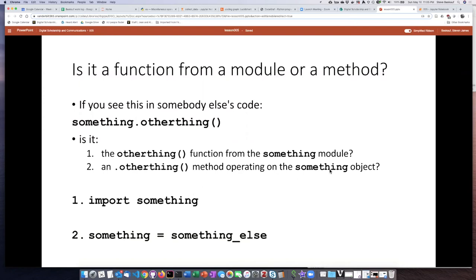On the other hand, if something is an object and dot other thing is a method operating on that, then we should see somewhere in the code a statement instantiating the something object. In other words, it should be being created from something else.